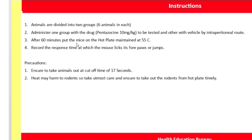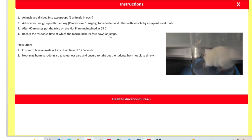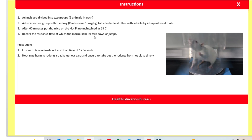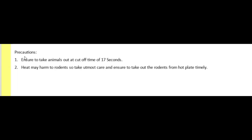After giving the drug, we have to wait for 60 minutes. After 60 minutes, put the mice on the hot plate maintained at 55°C. Record the response time at which the mouse licks its paws and jumps. We have to check at what time it is licking its forelimbs or starts to jump. Two precautions: ensure to take animals out at cutoff time of 17 seconds, and take utmost care because the heat may harm the rodent — ensure to take out the rodents from the hot plate timely.